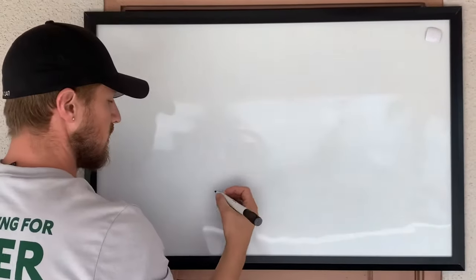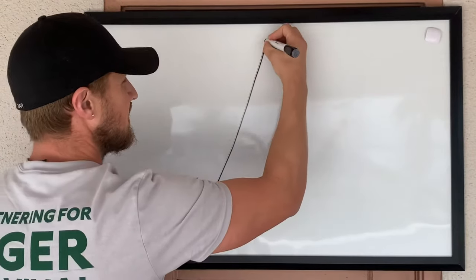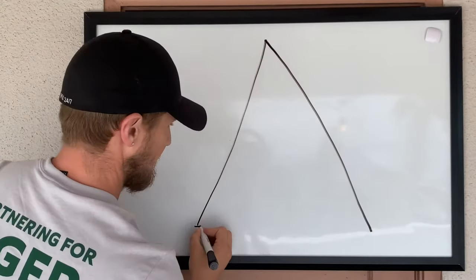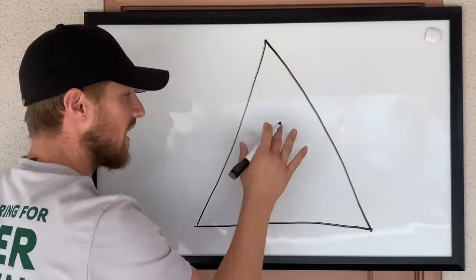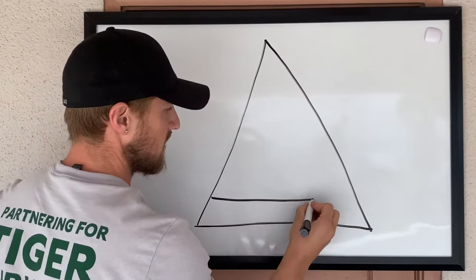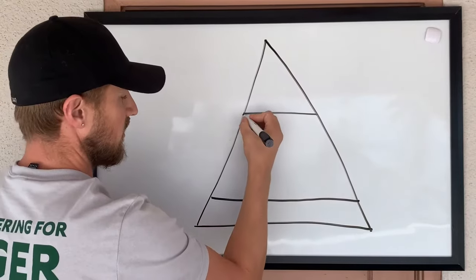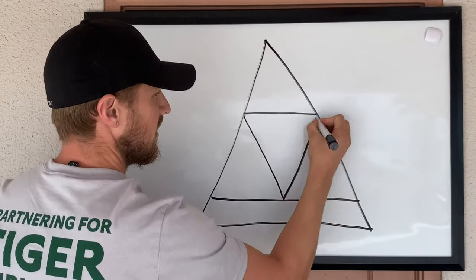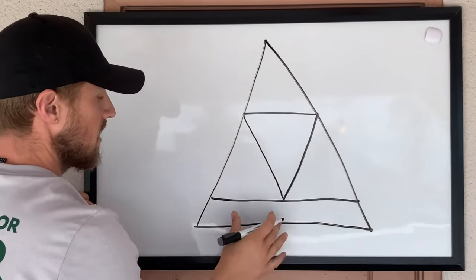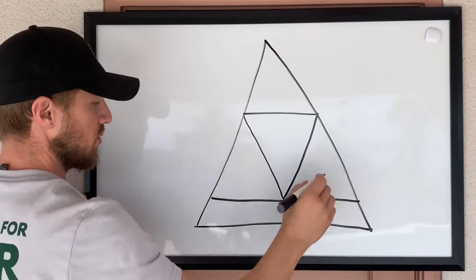The first thing we're going to do is draw a big triangle. Next we're going to divide it into sections. We're going to start with a base, start with a top triangle, and then divide the middle into three triangles. Then we're going to draw some altitude levels.